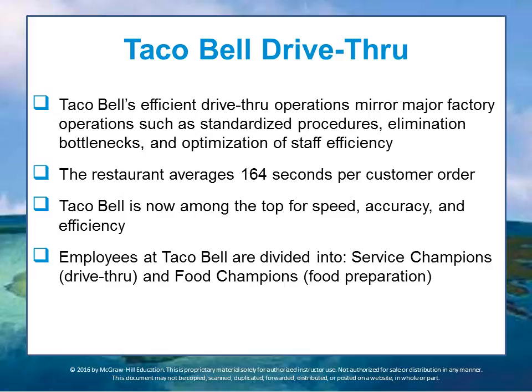Employees of Taco Bell are divided into two categories: service champions, who handle the drive-thru, and food champions, who handle food preparation. Service champions are trained to follow a specific script as they greet customers and take orders. They enter orders into the point-of-sale system, make drinks when needed, and handle payments. When processing orders for more complex menu items, service champions may assist food champions in food preparation. The script goes a long way towards eliminating botched orders and creating an expectation for customers which is met every time they do a drive-thru sale.